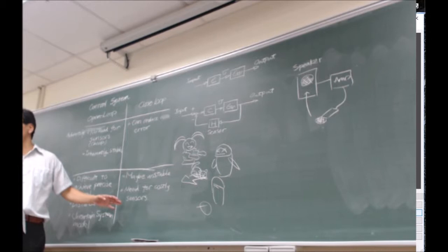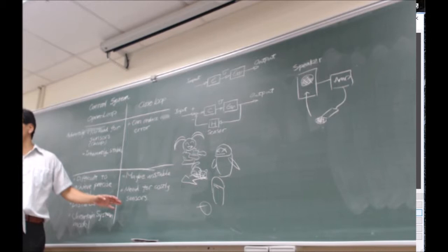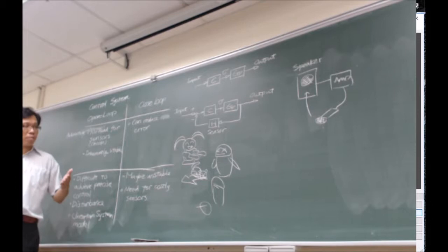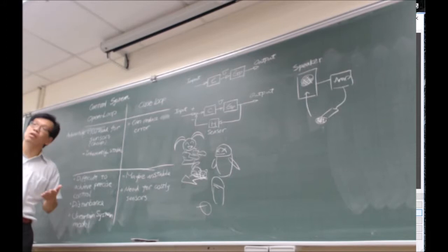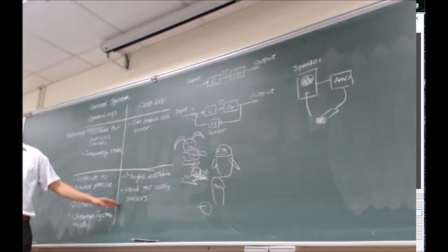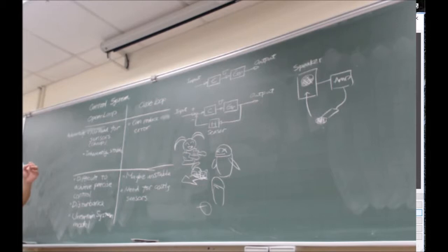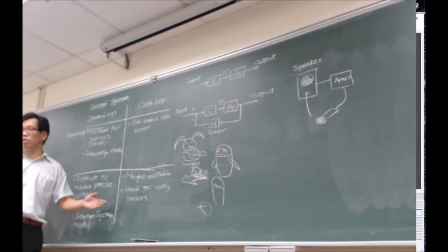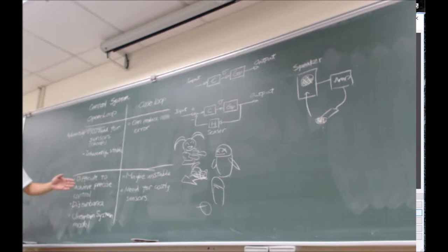Even if you're using a sensor, if it's not good enough it can lead to instability. When designing a control system, you need to find a balance. You can't just say, 'I can make everything precise and stable, but the sensor costs $20,000.' If you need to produce one million pieces at that price, you're fired. So be sure you understand the advantages and disadvantages — that's something you'll encounter as an engineer.